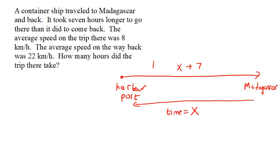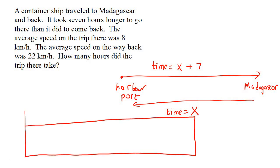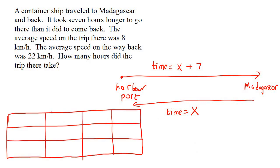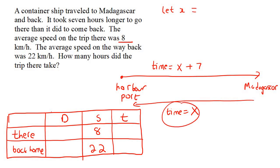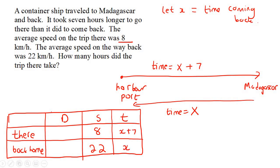So the time coming back is x, and the time going there is x plus seven. We're still going to make use of a table because a table is just brilliant — it really helps us. So we have distance, speed, and time, and then going there and coming back home. We don't know the distance. We do know the speed: the average speed on the trip there was eight kilometers per hour, and on the way back it was 22. The time going there is x plus seven, and the time coming back is x.